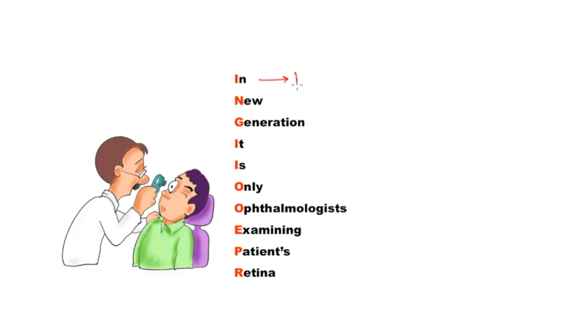So just observe the red letters. I here: I for internal limiting membrane.